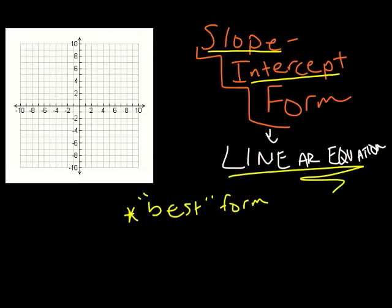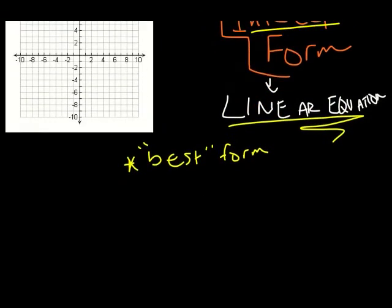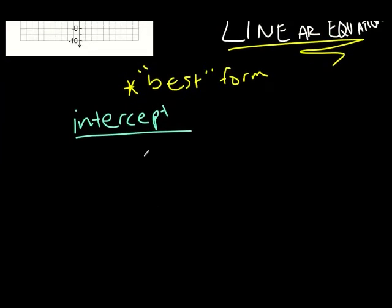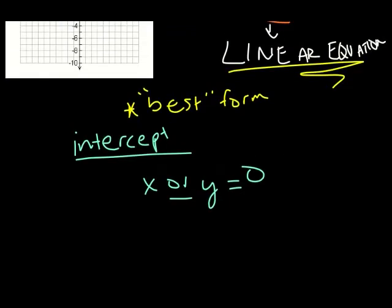The intercept is the point where either x or y equals 0. Let's start taking an equation and see what we can do with this.